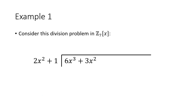Let's see this process in action with a problem in the polynomial ring Z7 brackets x. Z7 is a field with 7 elements, and every element other than 0 has a multiplicative inverse. Because the leading coefficient of the divisor is 2, we need to know what 2 inverse is in Z7. It's not too hard to see that 2 inverse is 4, because 2 times 4 is 8, and mod 7 that's the same as 1.